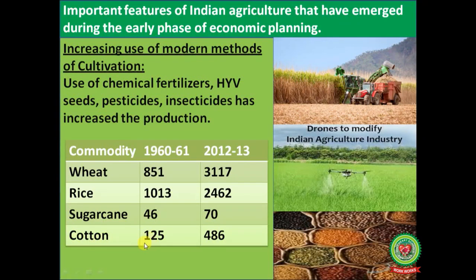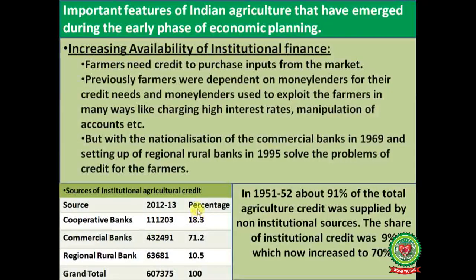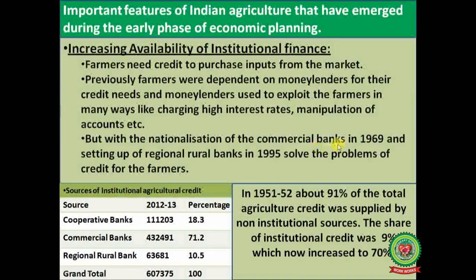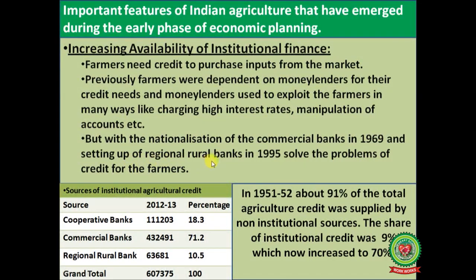Cotton also increased from 125 to 486. Next is increasing availability of institutional finance. Farmers need credit to purchase inputs like insecticides, pesticides, and hybrid seeds. Previously, farmers were dependent on moneylenders who exploited them by charging high interest rates and manipulating accounts. With the nationalization of commercial banks in 1969 and the setting up of Regional Rural Banks in 1995, the problems of credit for farmers were solved.